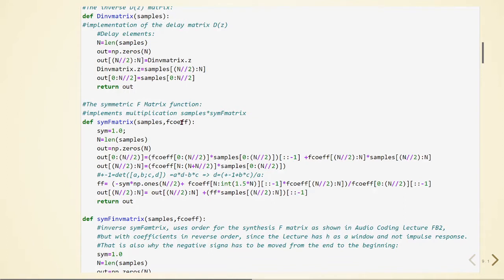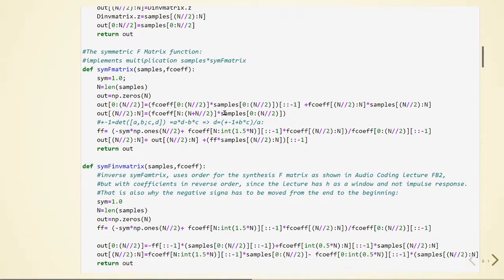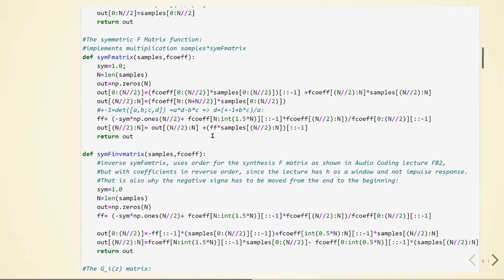It is the symmetric F matrix function we are calling here and we will do the multiplication of the samples with these coefficients. And we also need the inverse. The inverse uses order for the synthesis F matrix as shown in the lecture but with coefficients in the reverse order.